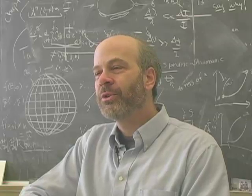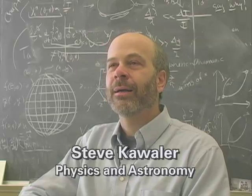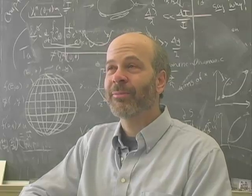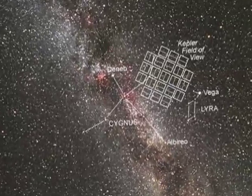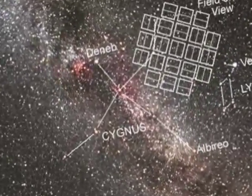The Kepler mission is a mission to search for Earth-like planets around other stars. It's our first real chance to do this in the history of mankind. We don't know which stars have planets or which stars are likely to have planets.